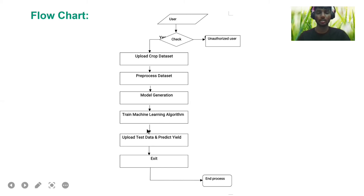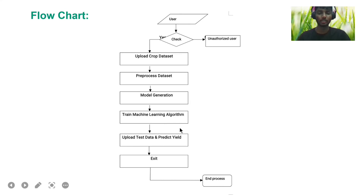Then we upload the test dataset. The test dataset and the output from the trained algorithm are compared, and the best output is given so that the crop yield is correctly produced. Then the process ends.